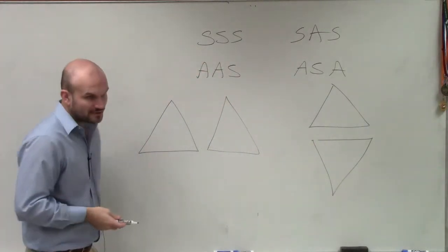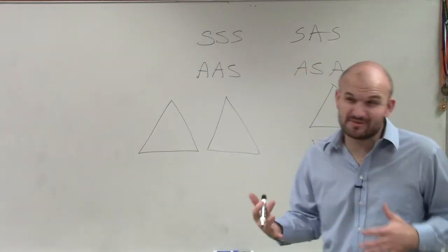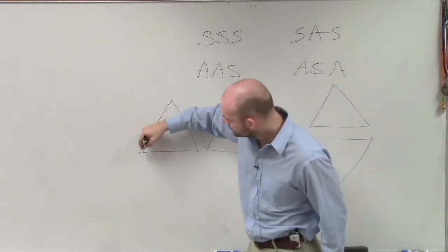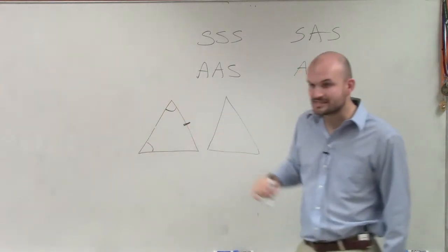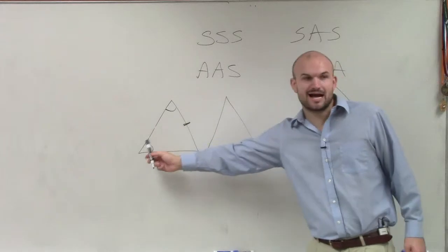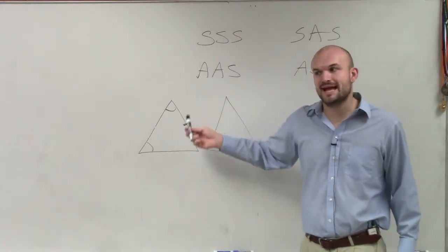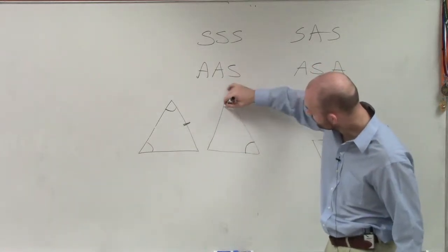So if I have two triangles, I can prove that those two triangles are congruent. And this is what we're going to be looking for today when we're doing our proofs, is if I have an angle, it goes angle, angle, and then side. So if I can see that I have two angles right next to each other, and then the next side, then I can prove that they are congruent.